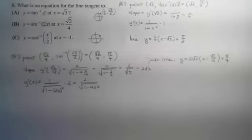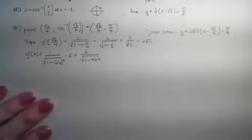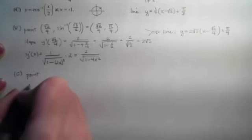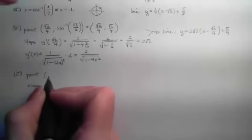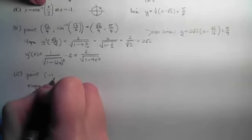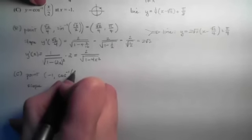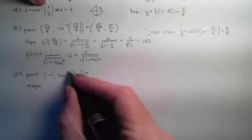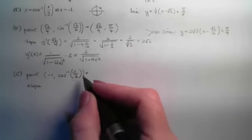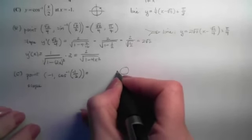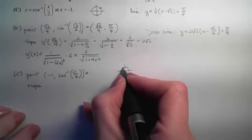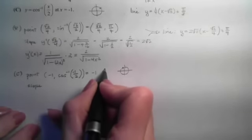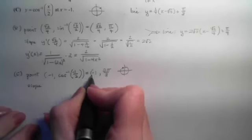Last one, part c. Instructions are still the same — we want an equation of a tangent line, so we need a point and a slope. The x-coordinate is negative 1 plugged into the function, giving arccos(negative 1/2). This is asking: what angle gave me a cosine of negative 1/2? Cosine is the x-coordinate on the unit circle, and we want it to be negative 1/2, which gives us 2pi over 3. That's the point.